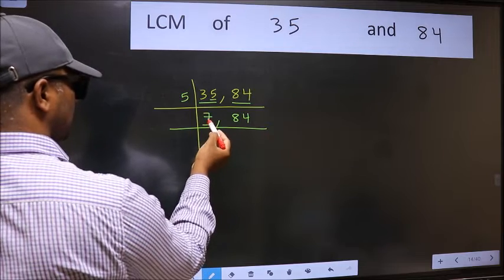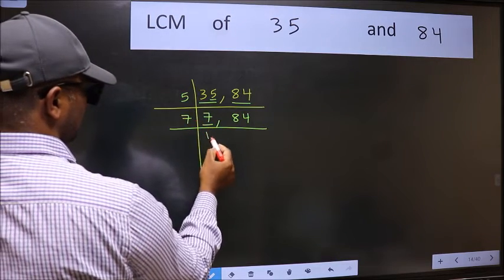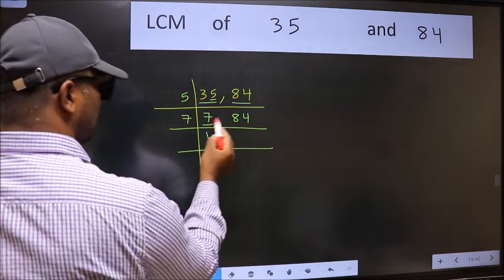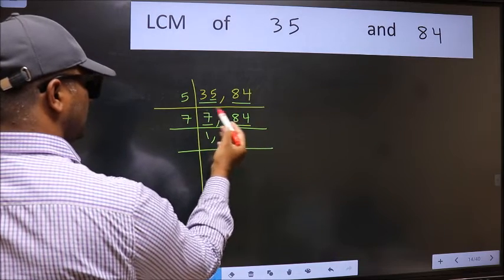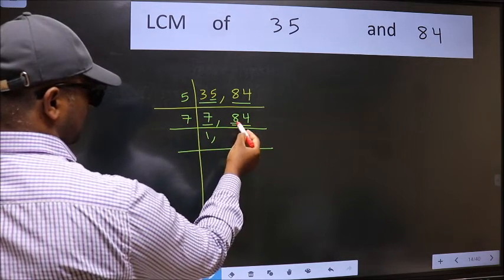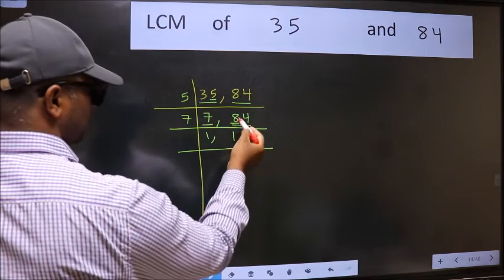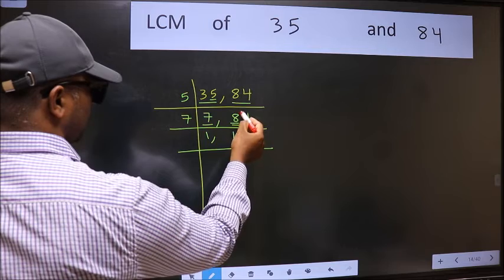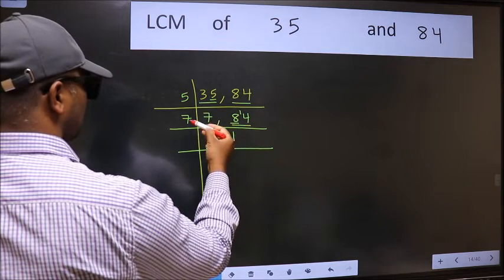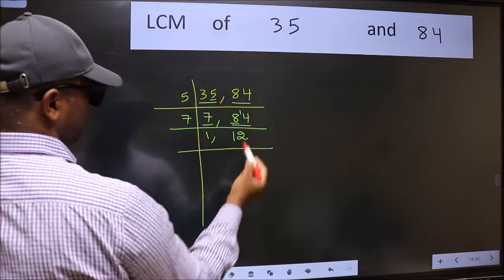Now here we have 7. 7 is a prime number, so 7 times 1 is 7. The other number 84 is divisible by 7. First number is 8, a number close to 8 in the 7 table is 7. 8 minus 7 is 1. 1 carried forward gives 14. When do we get 14 in the 7 table? 7 times 2 is 14.